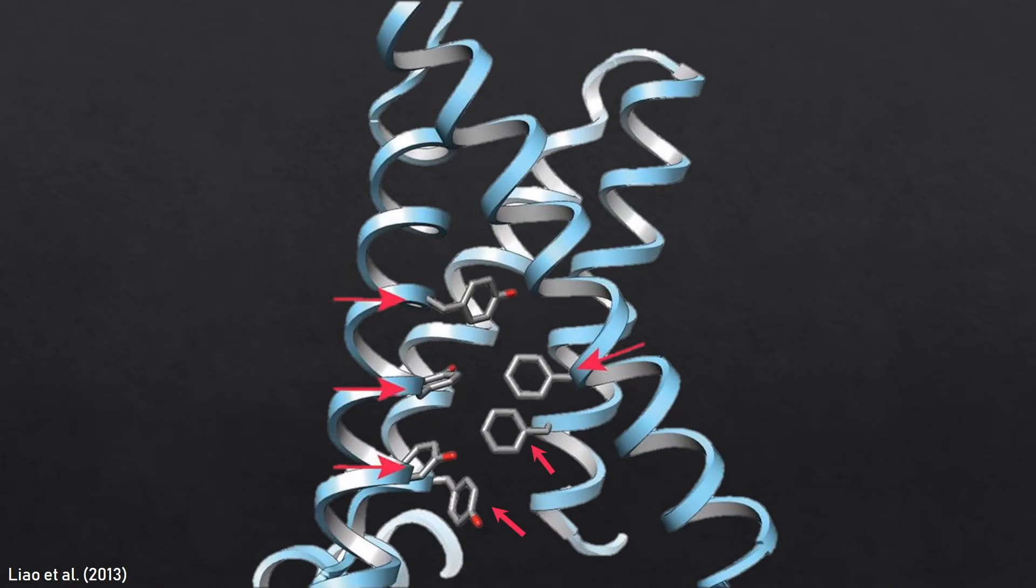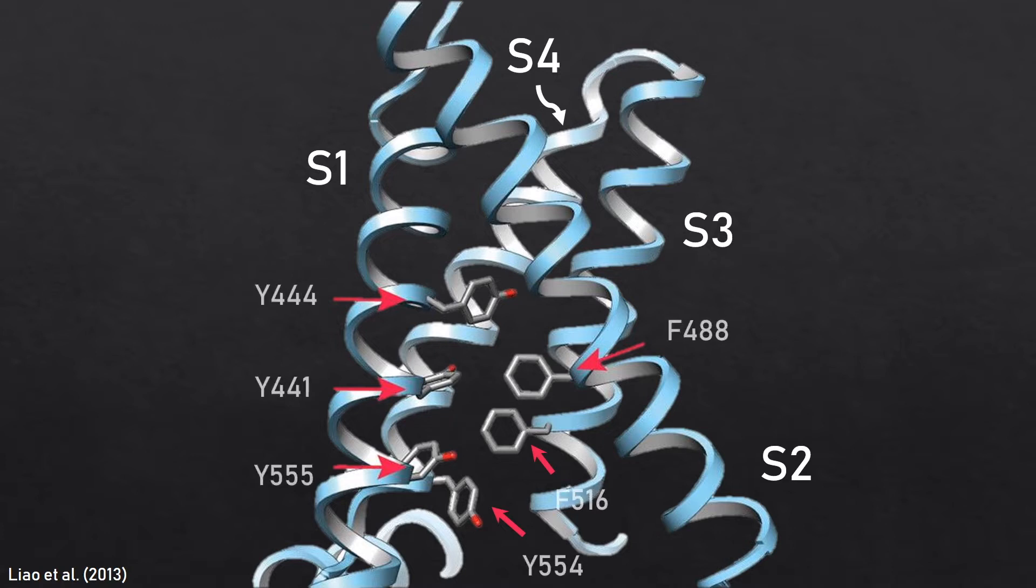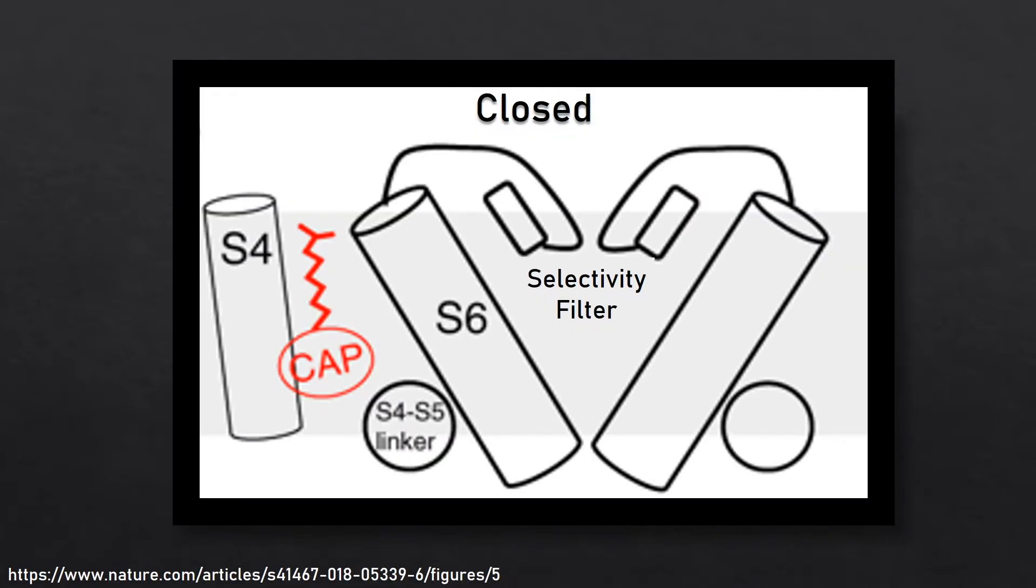Rigid hydrophobic packing created by the mostly aromatic residues of the S3 and S4 helices allow the S1-S4 domain to function as an anchor. The S4-S5 linker moves about this anchor to open and close the TRPV1 lower gate.